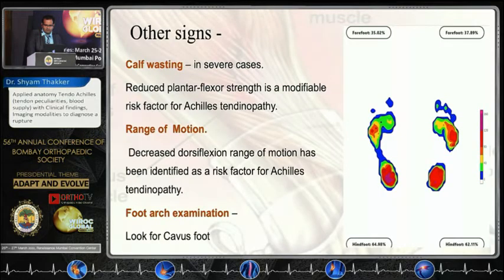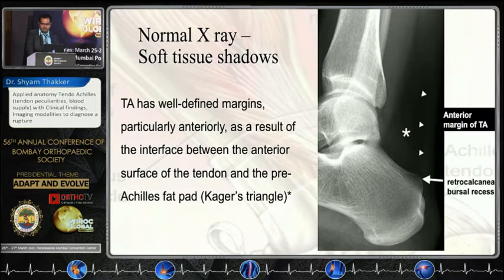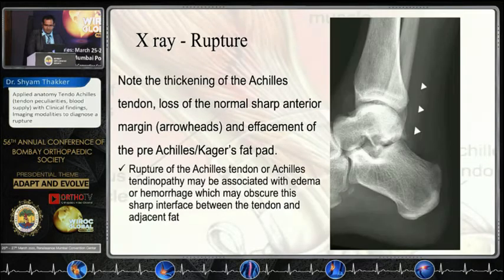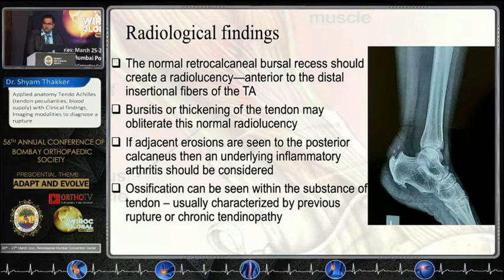Brushing up on imaging: X-ray should be done in standing for the ankle and foot — it is the fastest and most readily available. We cannot see much of the tendon itself, but we can see soft tissue shadows including the anterior border of the Achilles and the Kager triangle fat pad. In cases of rupture, we see obscuration of the fat pad. Radiological findings include osteophytes, ossification in the tendon, bursitis or thickening causing loss of radiolucency, and in inflammatory arthropathy, erosion around the attachment.